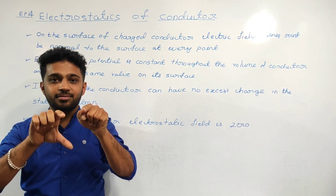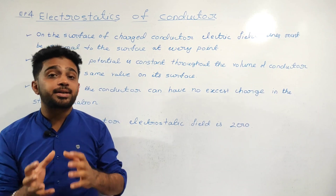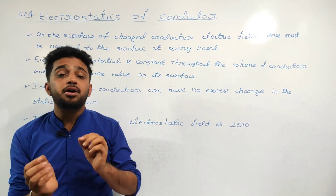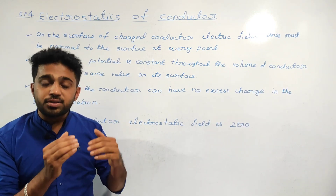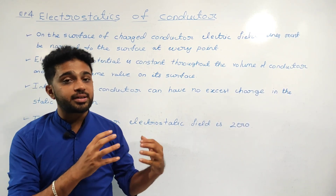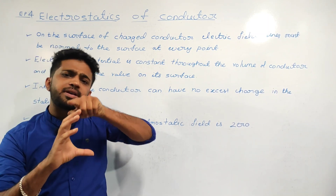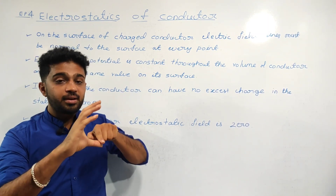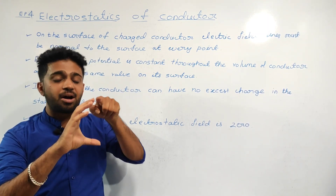The electric field lines meet the surface of the conductor at 90 degrees. We add the electric field lines to the surface of the conductor. Now we will see this is a spherical conductor.